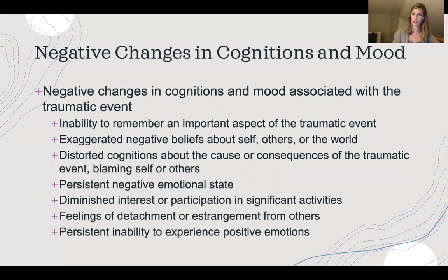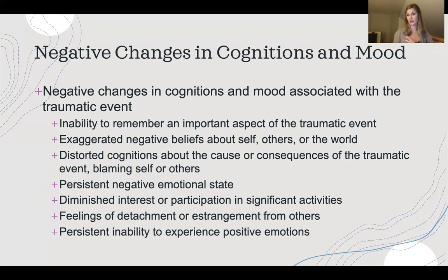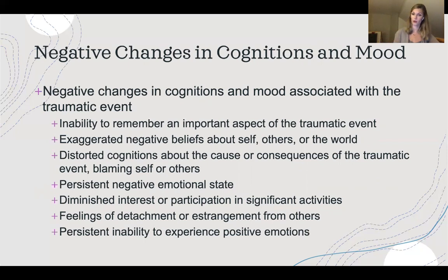We may also see negative changes in cognitions and mood — changes that often occur after the traumatic event. This includes an inability to remember an important aspect of the traumatic event, which we often see as a protective function of the brain, sometimes described as a blank space or blackout in memory. We might also see exaggerated negative beliefs about self, others, or the world — such as 'the world is a dangerous place and I'm not safe' — and distorted cognitions about the cause or consequence of the event, often manifesting as blaming oneself or others, for example, 'if I hadn't been there, this car accident wouldn't have happened, so it's my fault.'